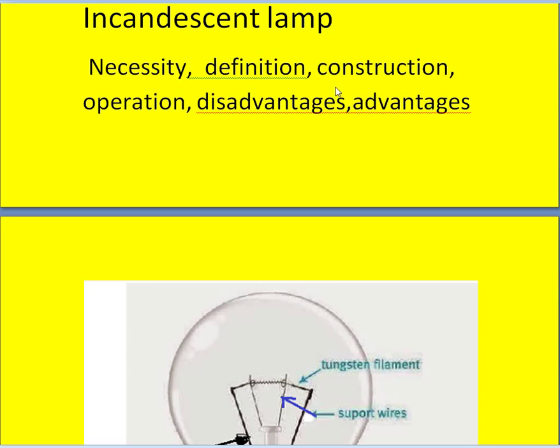So let me consider first necessity. What is the necessity of this lamp? When the natural light from the sun stops coming, then to continue the works we need artificial light. So to get the artificial light we need artificial lamps. So one such lamp is the incandescent lamp.